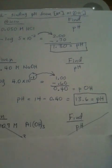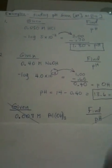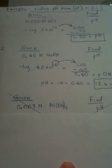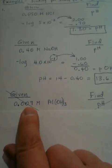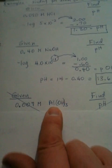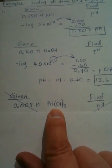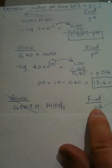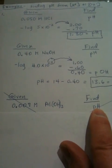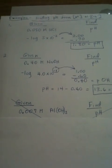This next problem deals with aluminum hydroxide, which has three hydroxide ions. And, we are given this as the molarity of the aluminum hydroxide. We're asked to find the pH, not the pOH.